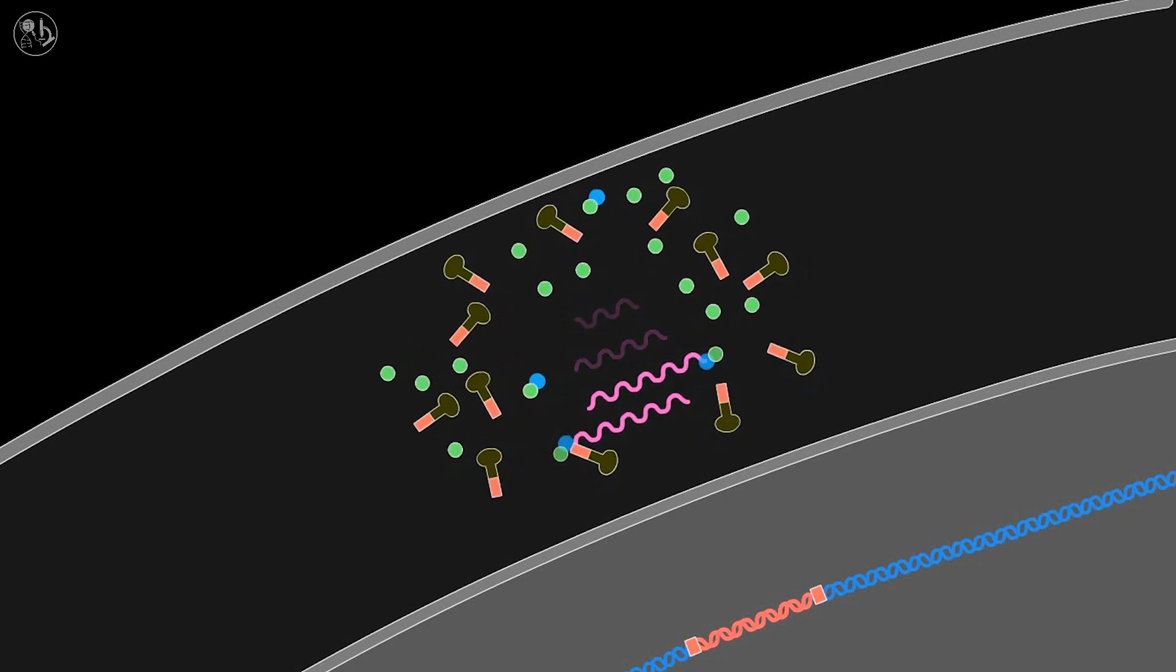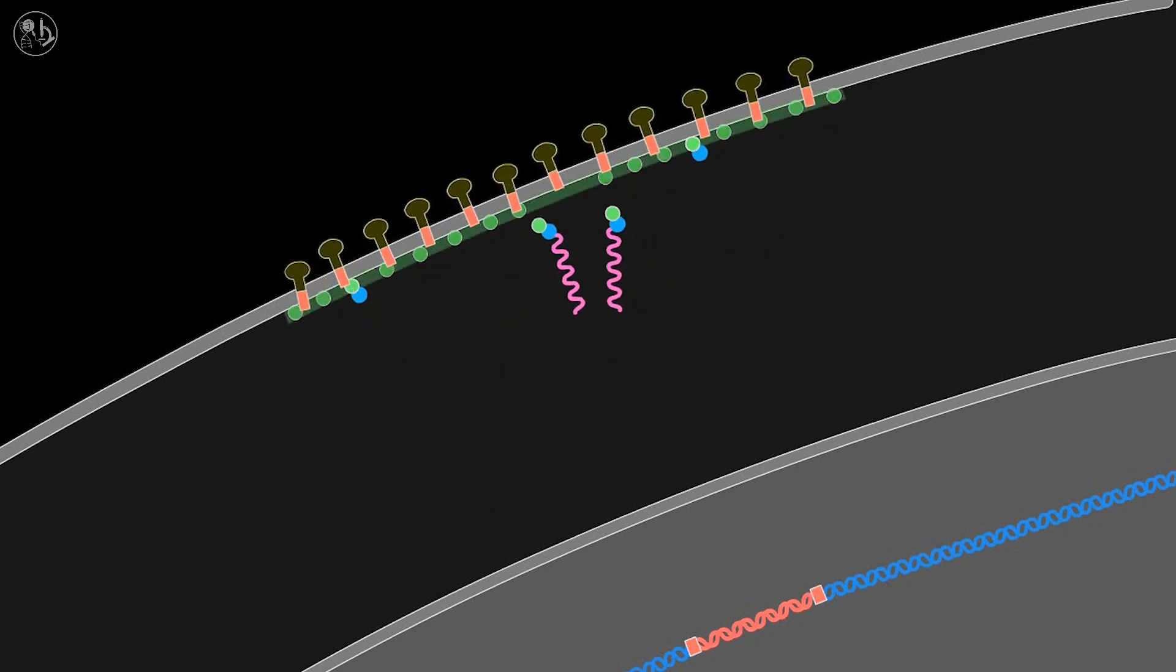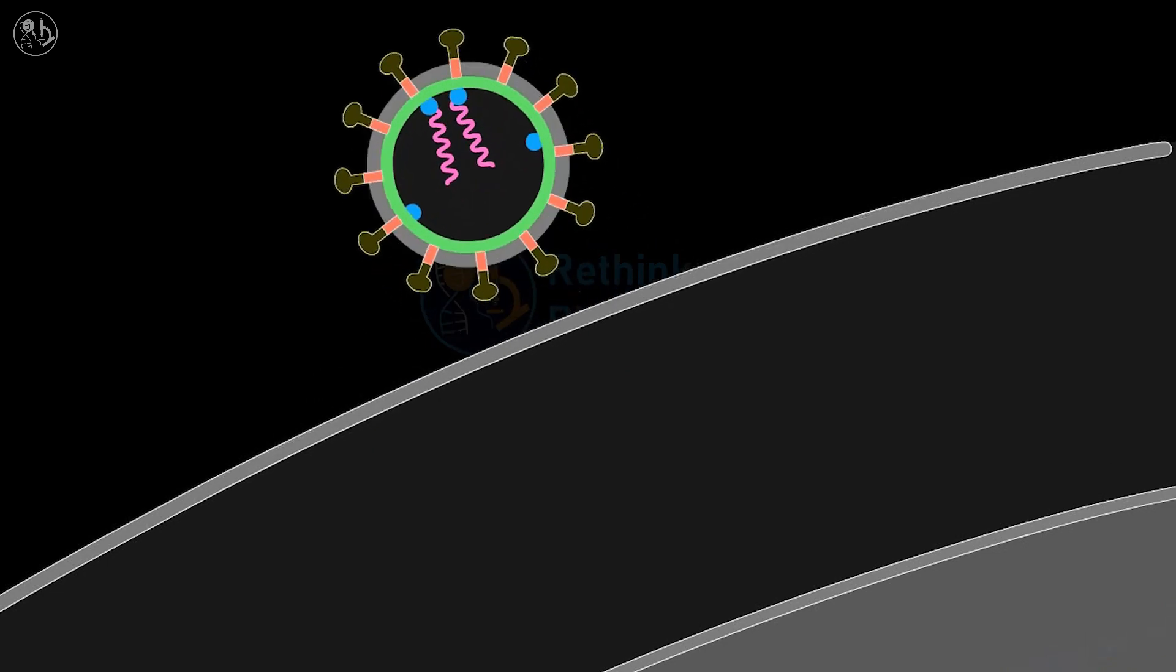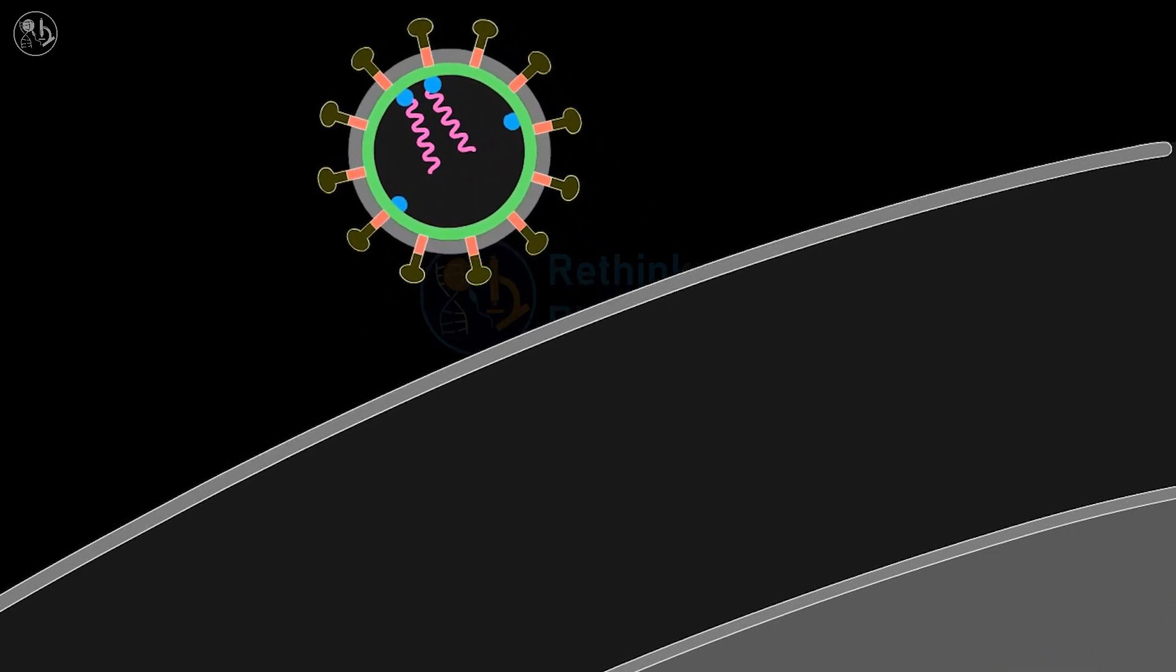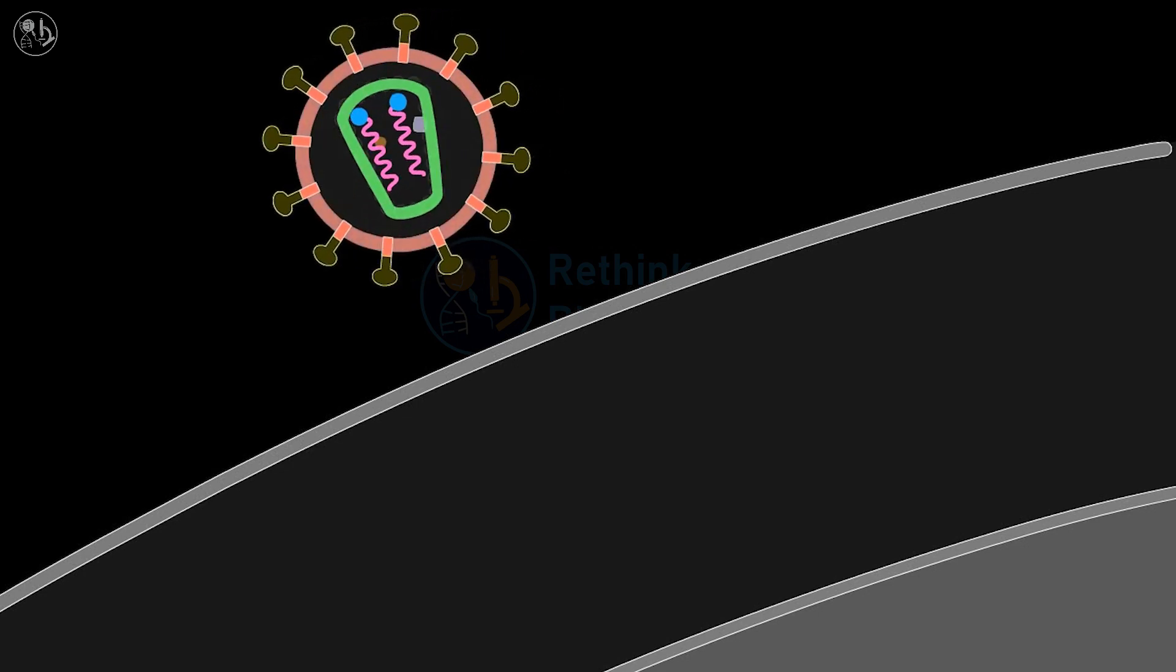Viral proteins congregate at the cell membrane with copies of the RNA genome and bud off to form a new viral entity. Maturation of this new virus particle continues after it has budded off from the host cell.